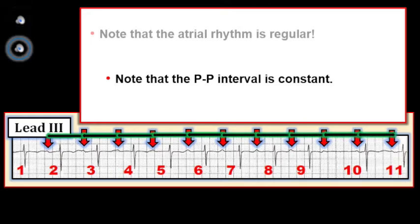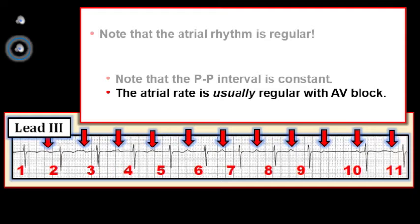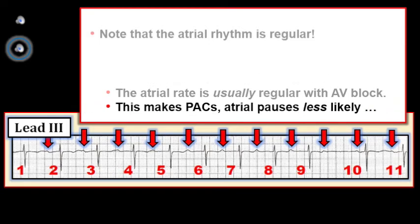One key point about ECG diagnosis of AV block is that the atrial rate should be regular, or at least fairly regular. There may be slight variation due to underlying sinus arrhythmia or ventricular phasic sinus arrhythmia, but by and large with AV block there will be a regular atrial rate. When there are pauses but the atrial rate is not regular, think about things like PACs, blocked PACs, sinus pauses, or exit block — all of which are common with sick sinus syndrome.